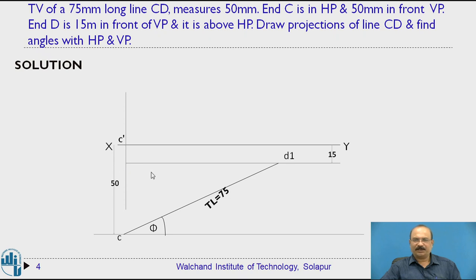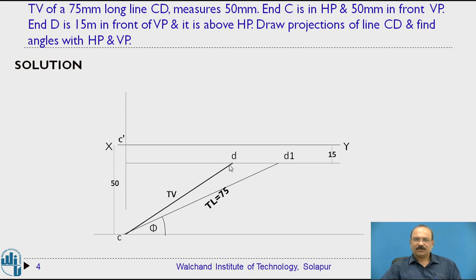One more piece of information: the top view of line CD measures 50 mm — this is the apparent length. Keeping the compass at C with radius 50 mm, we cut the locus line to locate point D. So CD = 50 mm is the top view length (TVL), and CD1 = 75 mm is the true length. We now have both the top view length and the true length in the top view.